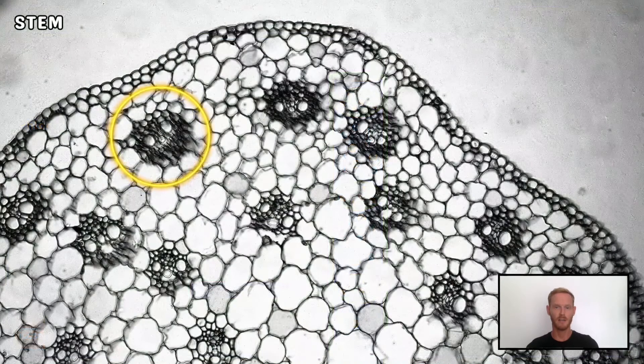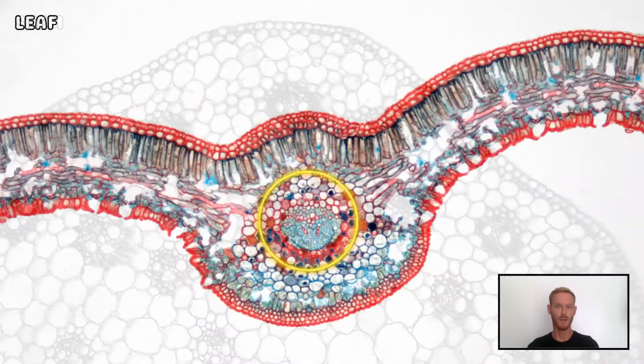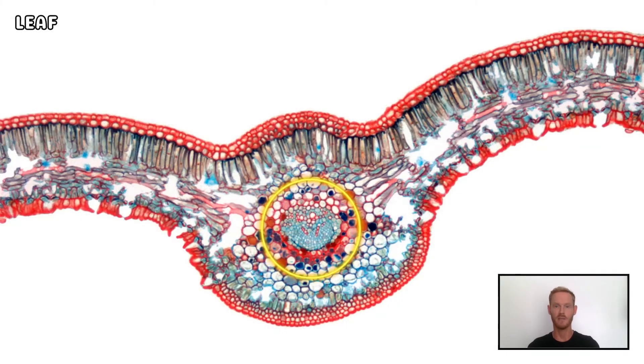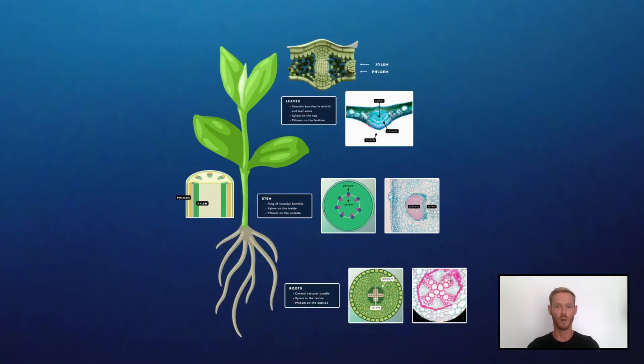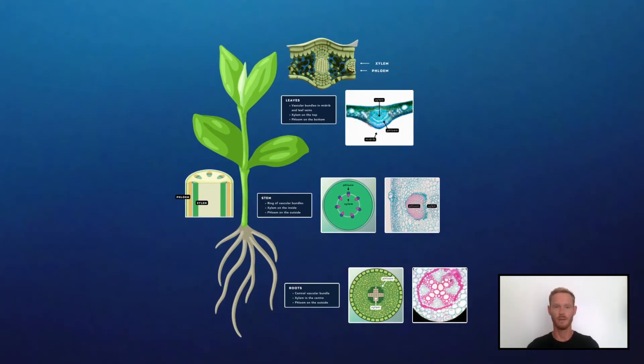Xylem and phloem are grouped together in vascular bundles, but these bundles are arranged differently in the roots, stem and leaves. You need to be able to identify their position in each part of the plant.